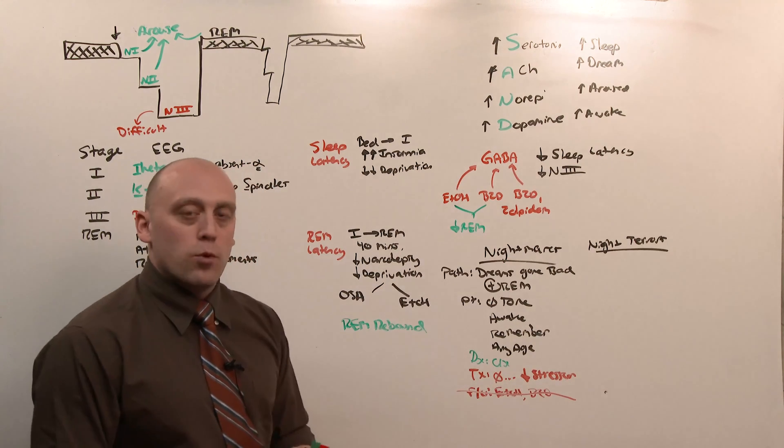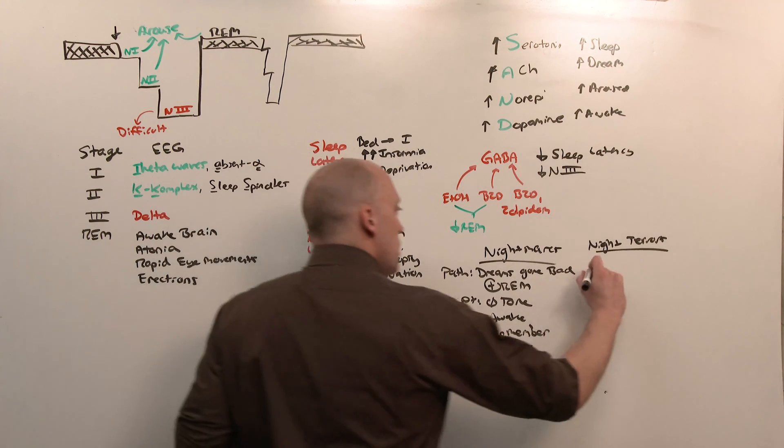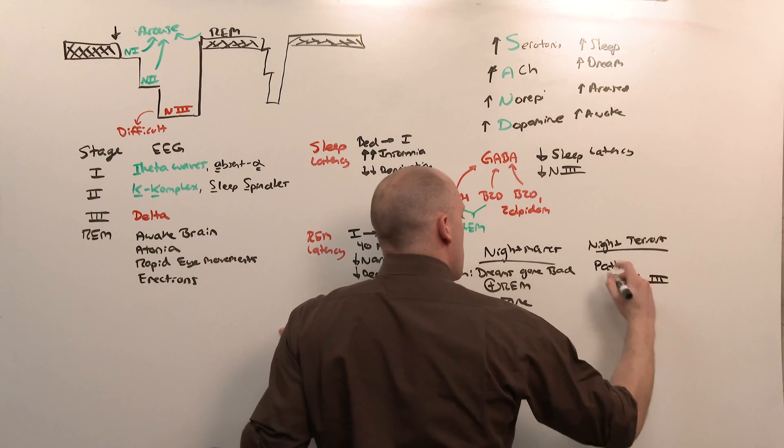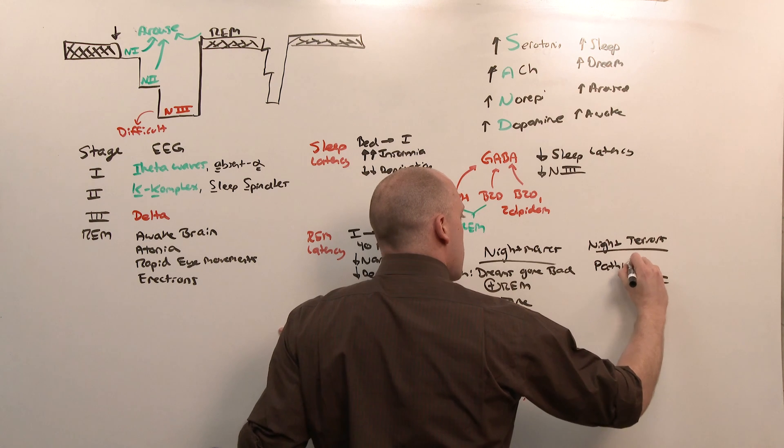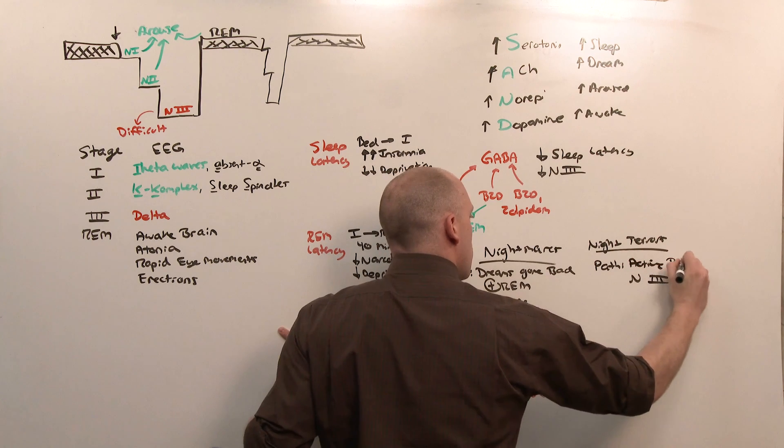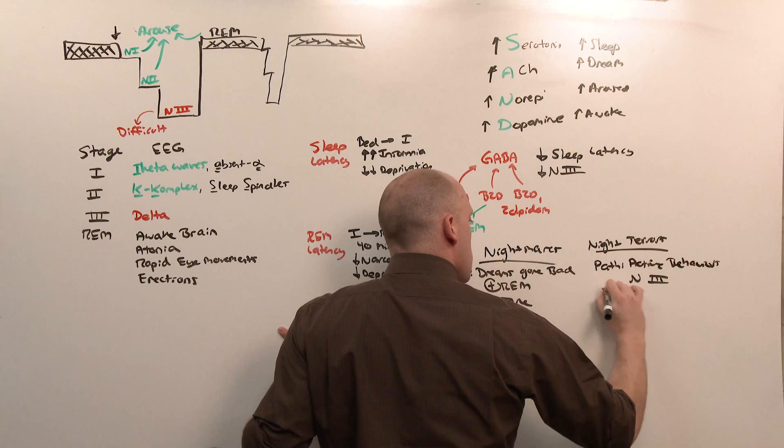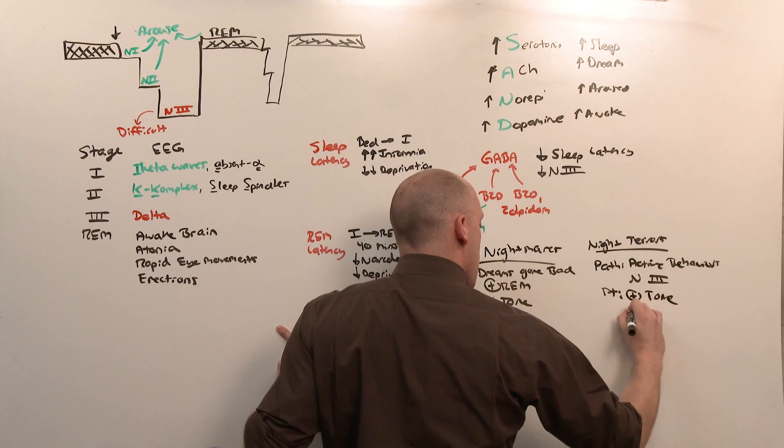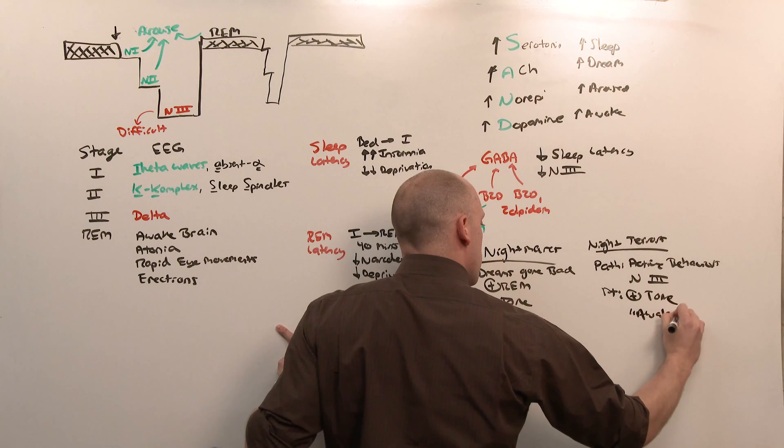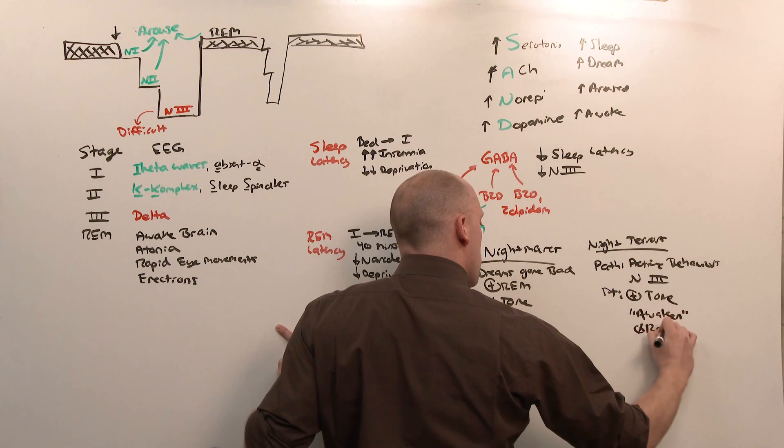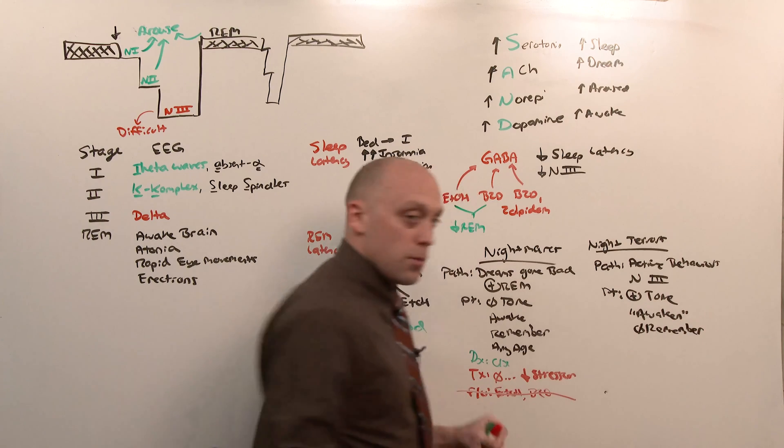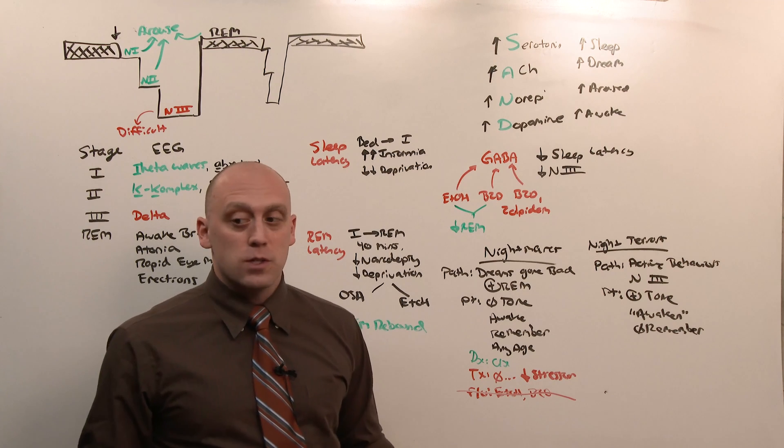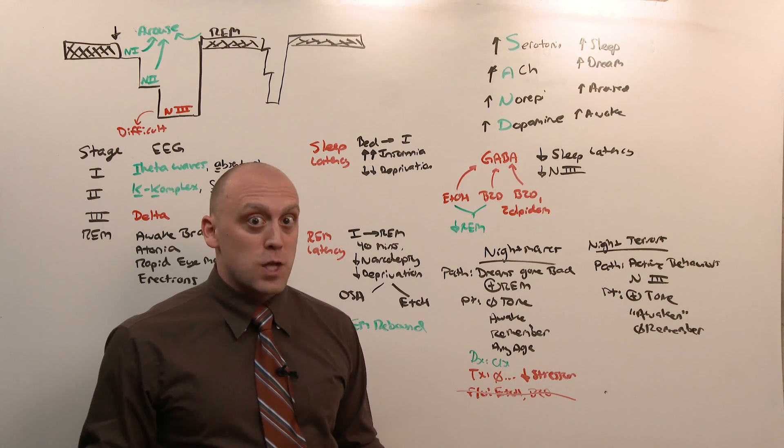Night terrors are a board favorite because they're so easy to spot. The patient is in non-REM stage three. These are more than dreams - these are just active behaviors while asleep. The patient, because they're in stage three, has tone. And it appears to everyone else that they have awoken, but they don't remember because they were not actually awake. This is a kid who sits up, screams, maintains tone, but is inconsolable. The parents freak out because it looks like the kid's having this traumatic experience, and the kid goes to sleep and doesn't remember that it even happened.